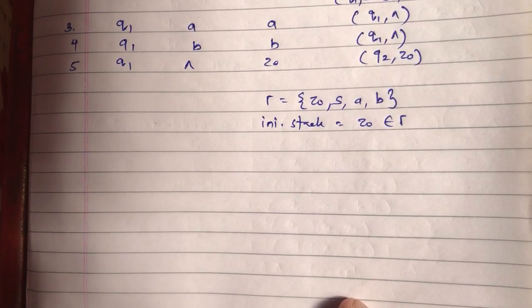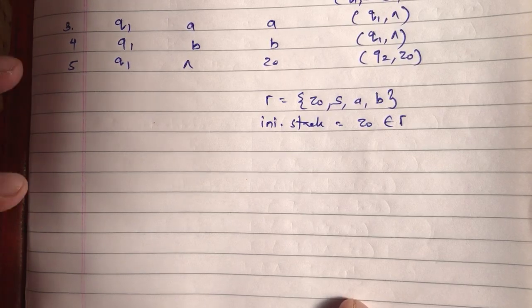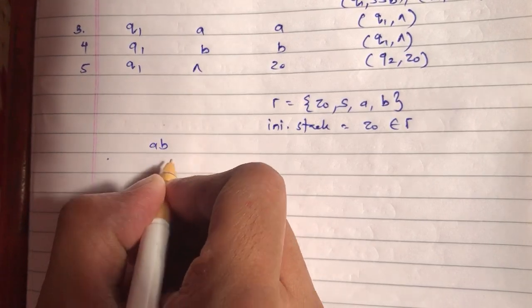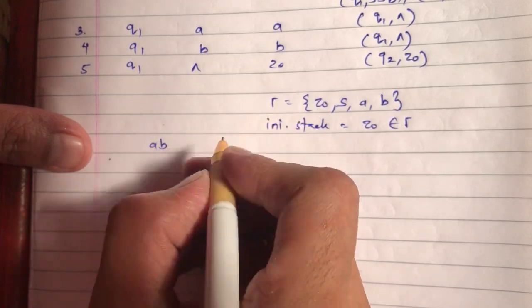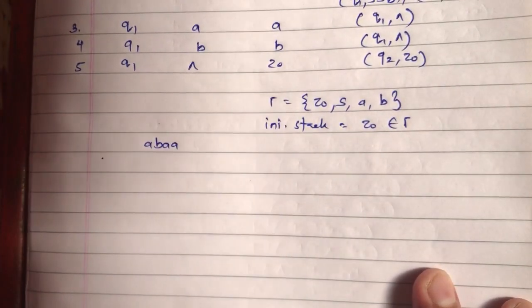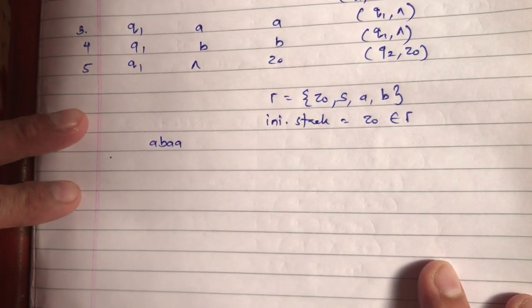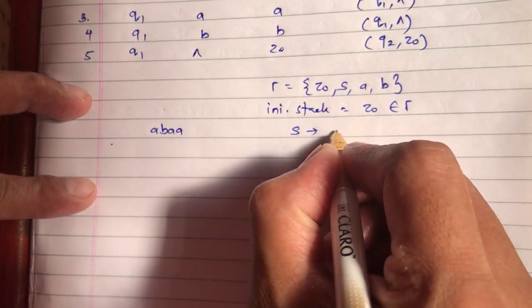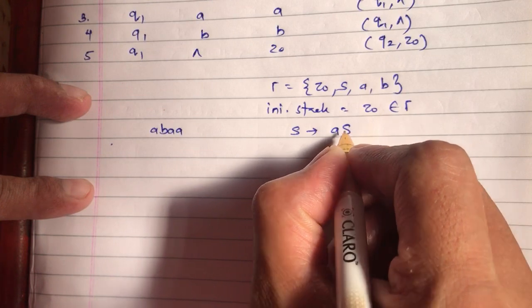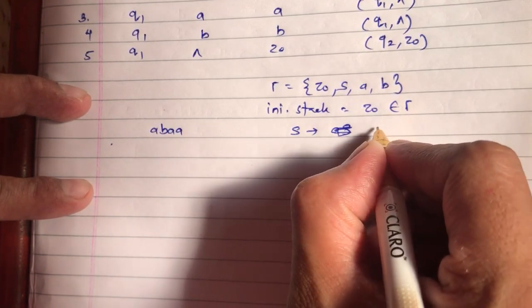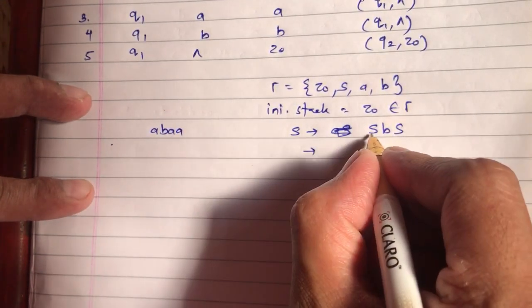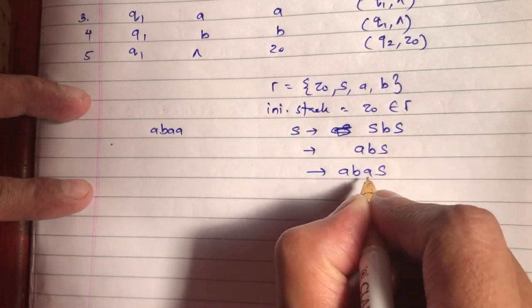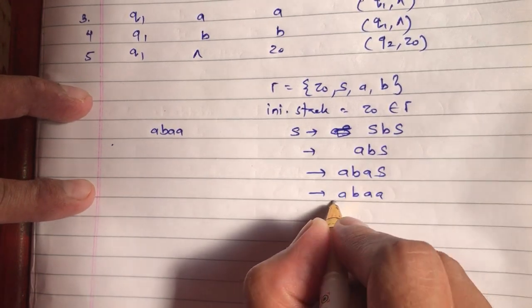Now let us solve one ID notation for this so you understand how strings are accepted. Let us take the string A, B, A, A — where the number of A's are more than number of B's. How will we solve the grammar derivation for this? S gives SBS, then this S gives A, this S gives A. This is how we accept ABAA through grammar derivation.